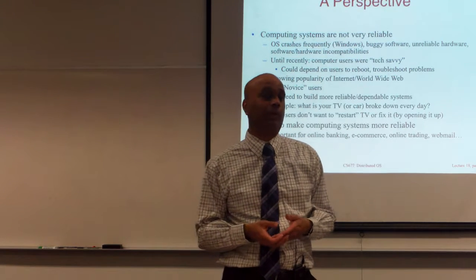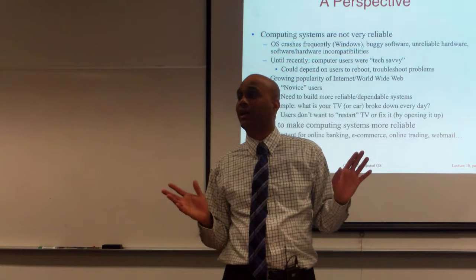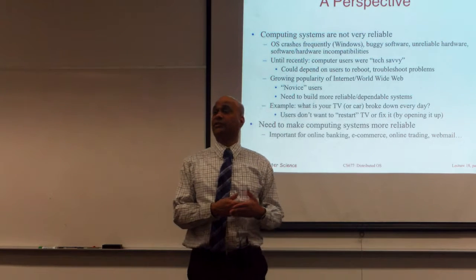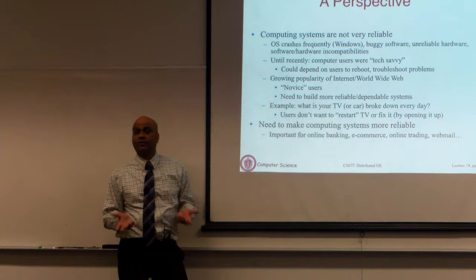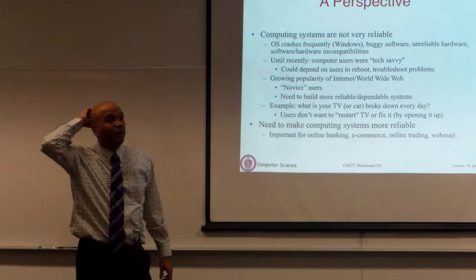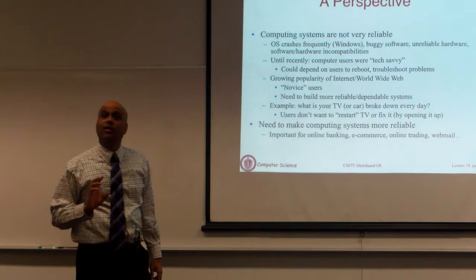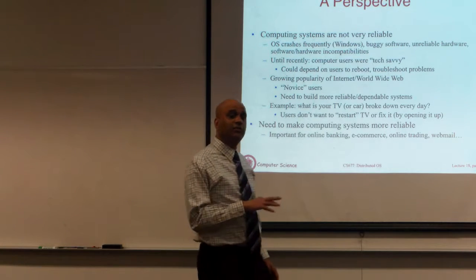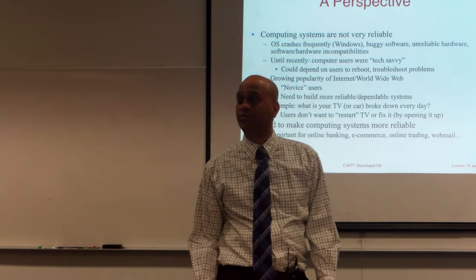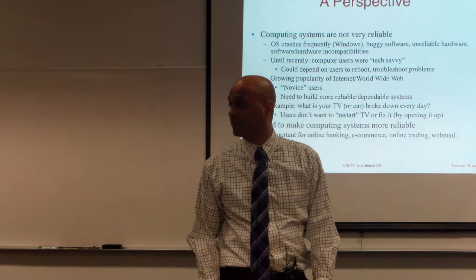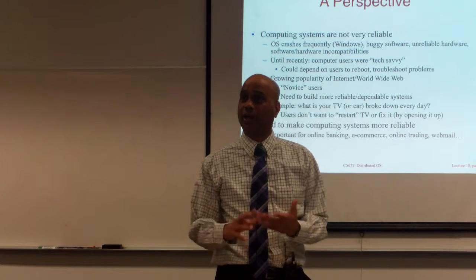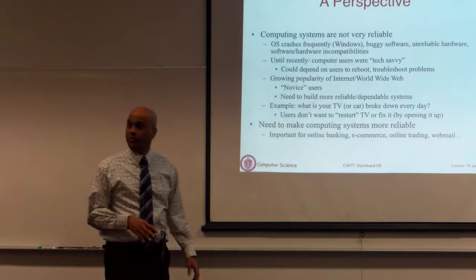If machines fail and you cannot access your bank site, you cannot access your money — real things get impacted. Systems are also distributed to serve large numbers of users, which only makes the problem worse because the probability of failure is higher in a distributed system. At the same time our systems are not reliable, so put together this causes a lot of problems. Failures of systems cause real consequences — the airline system goes down, flights don't take off; the bank system goes down, people don't have access to their money.